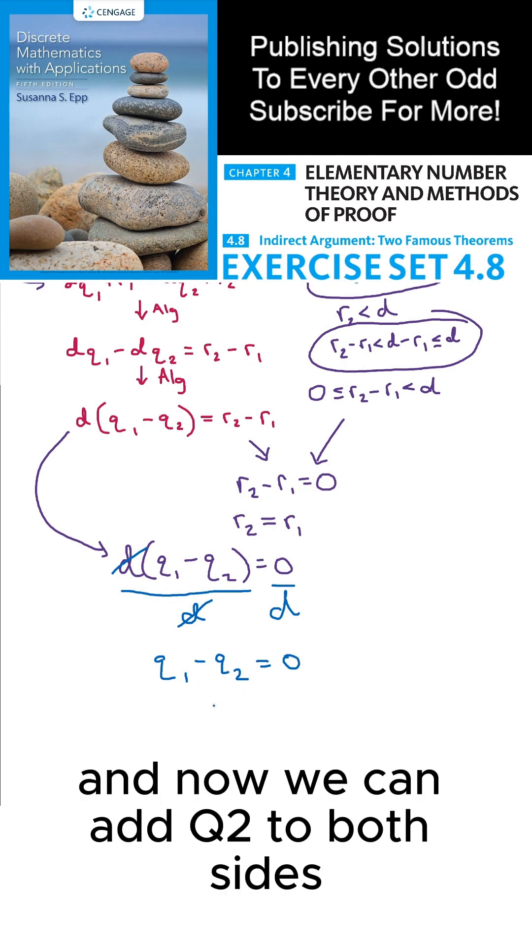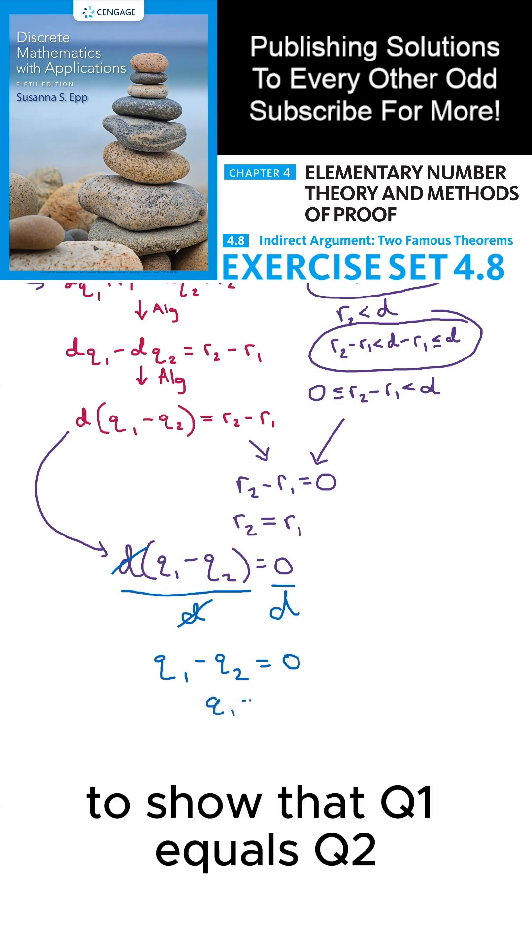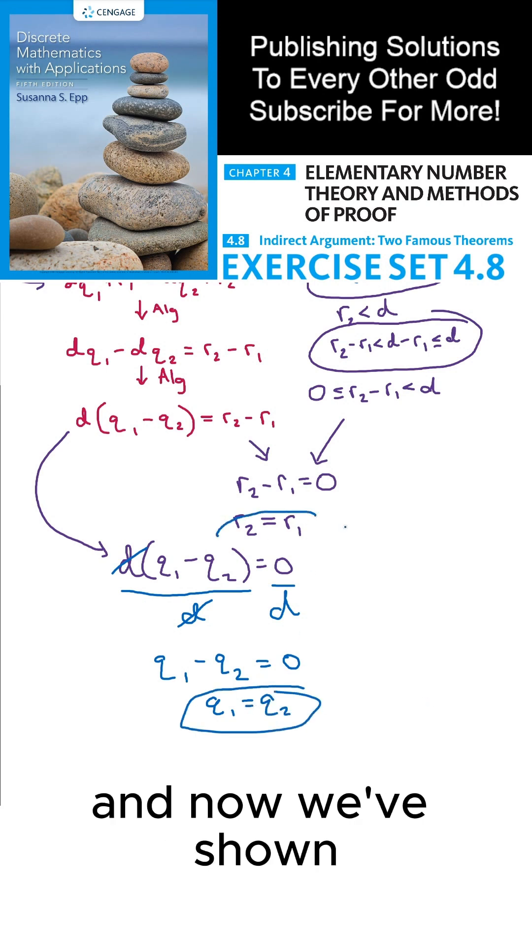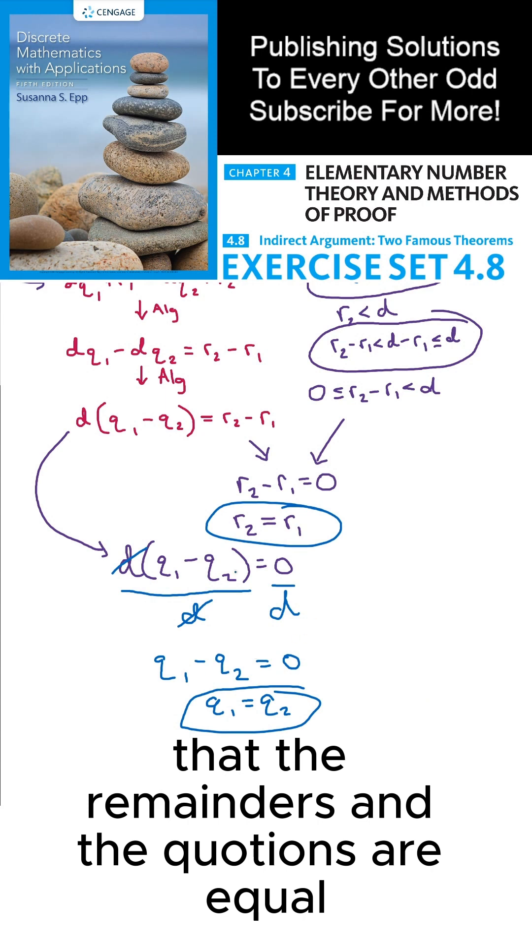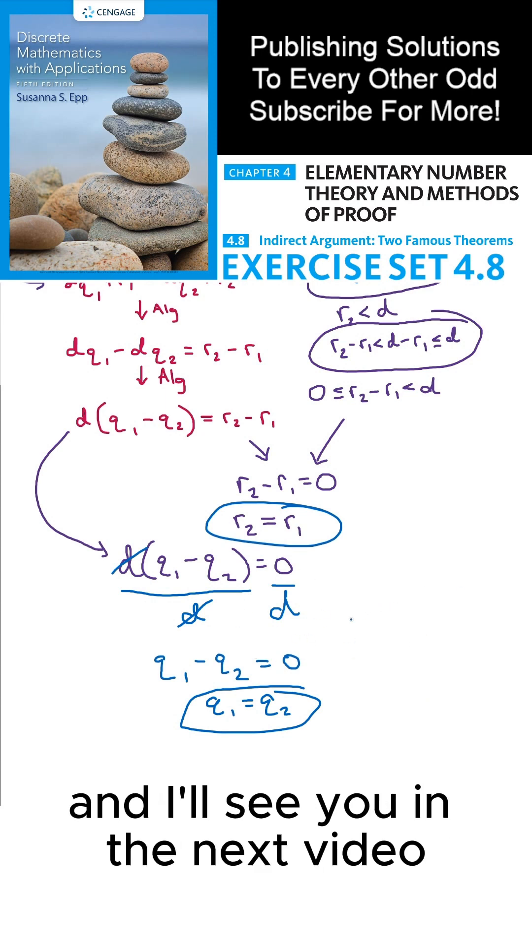And now we can add Q2 to both sides to show that Q1 equals Q2. And now we've shown that the remainders and the quotients are equal. Thanks everyone and I'll see you in the next video.